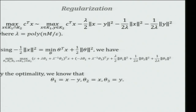The theta variables come from dualizing the quadratic function — notice x squared equals the minimum of a linear term plus theta squared, so you replace every quadratic function with this formula and get three variables theta1, theta2, and theta3. You realize you can compute the gradient using the optimization oracle. This is the function of theta1, theta2, and theta3, and you want to compute the gradient.